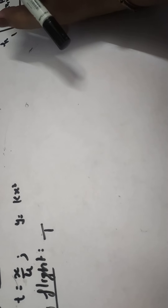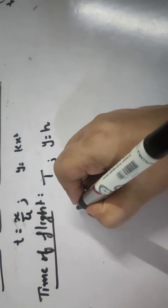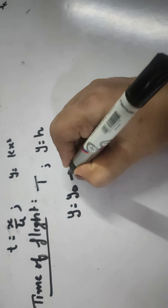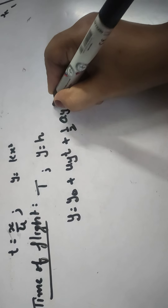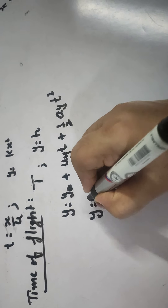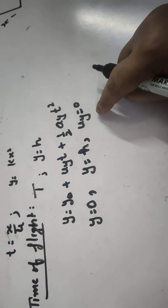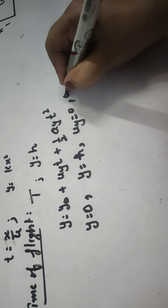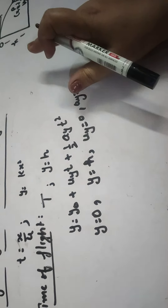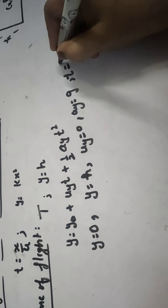Let H be the vertical height covered by the projectile, so Y is equal to H. Using the equation Y = Y₀ + UY·t + ½·AY·t², Y₀ is 0, Y is H, and UY is 0 because there is no vertical component of horizontal velocity. AY is equal to G since the projectile moves under gravity, and small t equals capital T.